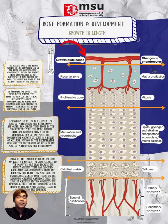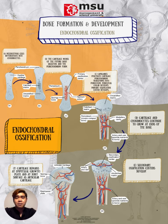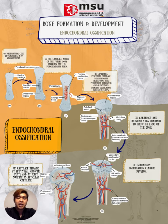The next ossification process is endochondral ossification. In endochondral ossification, bones form by replacing hyaline cartilage. Cartilage does not become bone; instead, cartilage serves as a template to be completely replaced by new bone. Endochondral ossification takes much longer than intramembranous ossification. Bones at the base of the skull and long bones form via endochondral ossification. In a long bone, at about 6 to 8 weeks after conception, mesenchymal cells differentiate into chondrocytes that form the cartilage in a skeletal precursor of the bone.